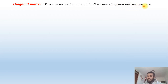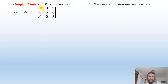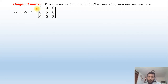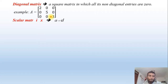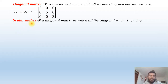Another type is the diagonal matrix: a square matrix in which all non-diagonal entries are zero. For example, [2, 0, 0; 0, 5, 0; 0, 0, 3] — the diagonal entries are non-zero whereas all non-diagonal entries are zero. This kind of matrix is called a diagonal matrix.